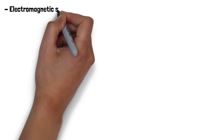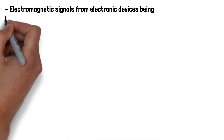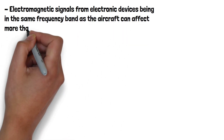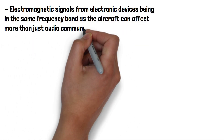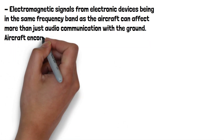Any of these things occurring could cause pilots to misunderstand crucial information, such as when they're clear for takeoff or landing. Electromagnetic signals from electronic devices being in the same frequency band as the aircraft can affect more than just audio communication with the ground.